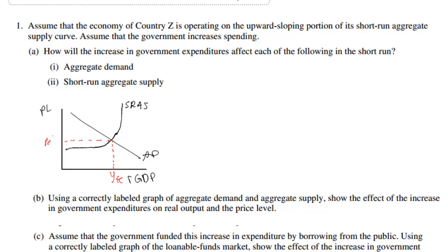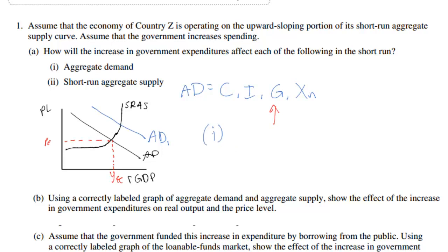How will the increase in government expenditures affect each of the following in the short run? Aggregate demand is made up of four types of expenditures: consumer spending, investment spending, government spending, and net exports (exports minus imports). An increase in government spending therefore leads to an increase in aggregate demand, so we shift our aggregate demand curve outward to AD1.